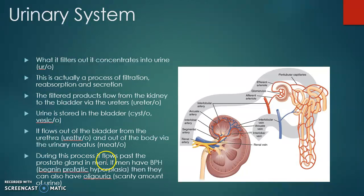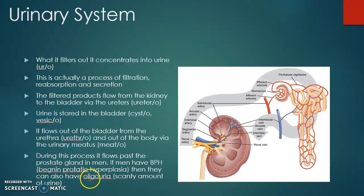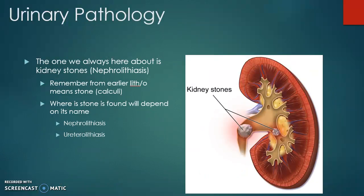Urine flows past the prostate gland in men. If men have BPH — benign prostatic hyperplasia — they can also have oliguria, which is a scanty amount of urine. Make sure you understand that oligo means scanty. Also know nocturia and other related terms. The most common pathology we hear about is kidney stones — nephrolithiasis.